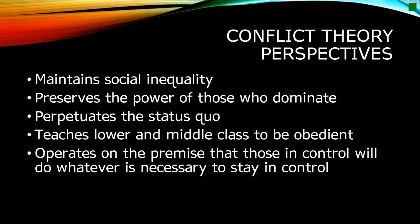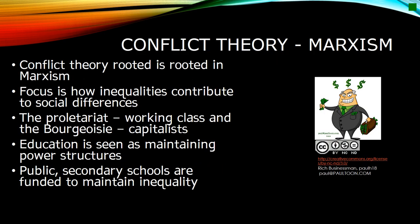Conflict theorists see the educational system as perpetuating the status quo by molding the lower and middle classes into being obedient workers. One of the premises of conflict theory is that whoever is in control will do whatever they need to do in order to stay in control. The focus of conflict theory is how inequalities contribute to social differences and perpetuate differences in power. Marxism provided the foundation for conflict theory. The lower or working class is referred to as the proletariat and the business owners or capitalists are referred to as the bourgeoisie. Functionalists claim that schools sort students based upon merit, while conflict theorists argue that schools sort students along distinct class and ethnic lines.